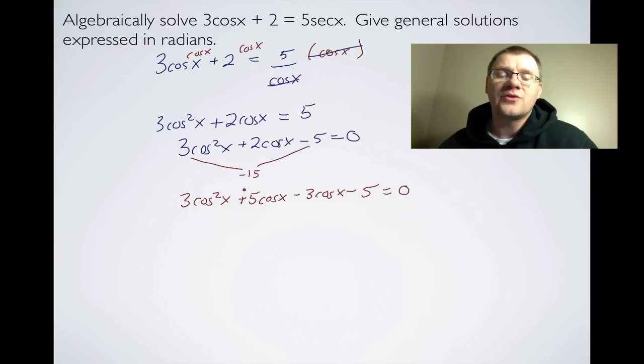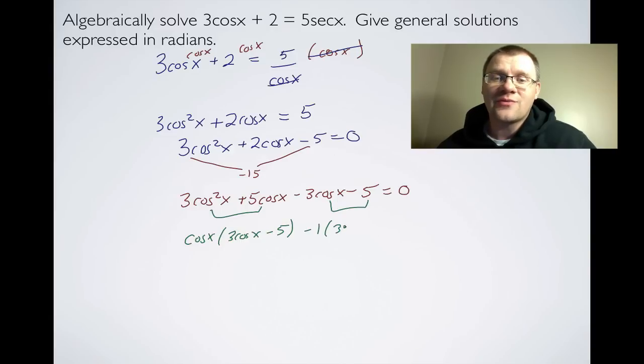And then we can do what we normally do for a decomposition question, we group these things. And we take out a greatest common factor. So we take out a cosx here and we get (3cosx - 5). And we take out a -1 here and we get (3cosx - 5).